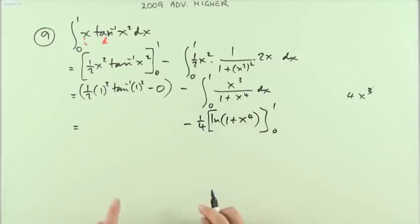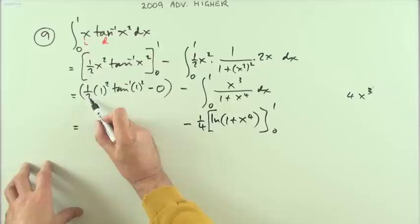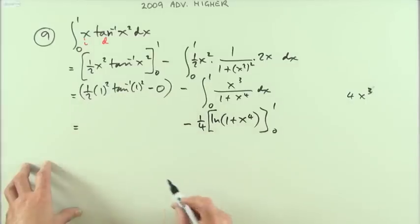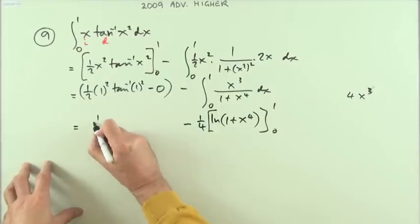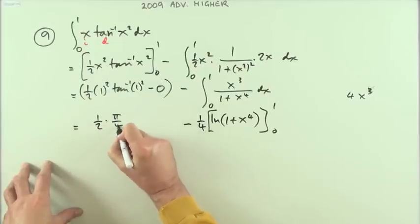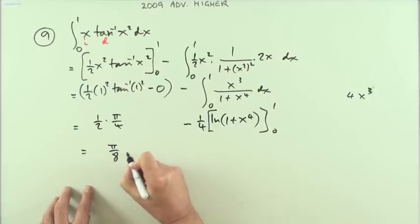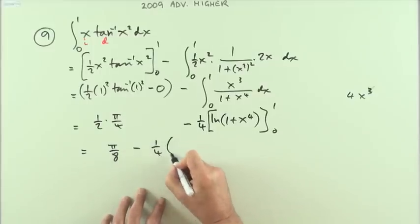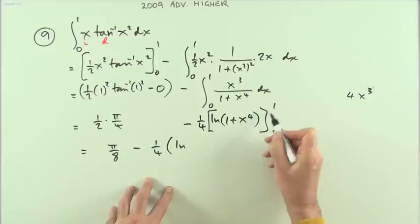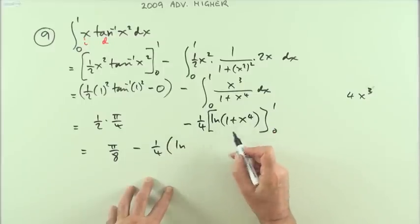I'll come back to that in a minute. And then what's this part here anyway? So you've got a half of 1 squared is 1, inverse tan of 1 that's pi upon 4, so what I've got then is a half of pi upon 4, and of course the rest was just 0, so that part is pi upon 8.